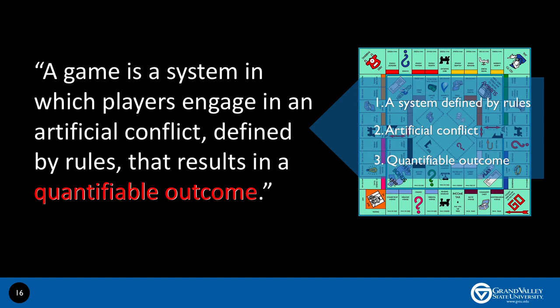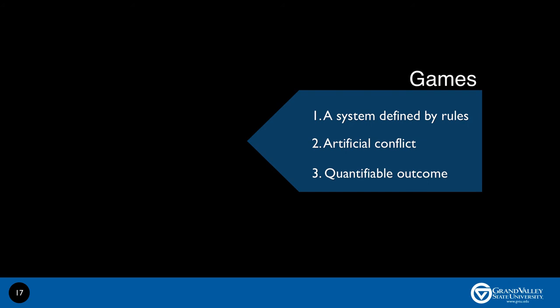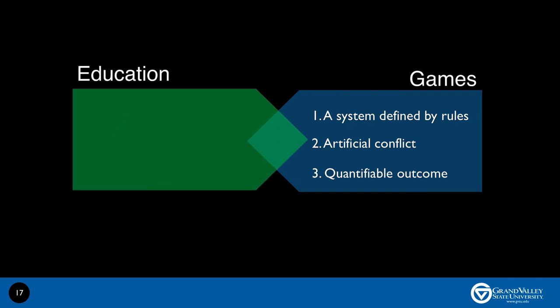Just a side note — I just heard that Hasbro, the company that markets Monopoly, is coming up with a cheater's edition of Monopoly. In this edition, players get rewarded for cheating. I don't know if that is a skill set we want to see in our students. Now, we can use this definition in education as well. Games as systems defined by rules — we can say that content areas and subject areas in education are also systems defined by rules, so we can map what is happening in a game to what we want to happen in those content and subject areas. Similarly, games result in a quantifiable outcome, and in education we can use this quantifiable outcome as assessment.